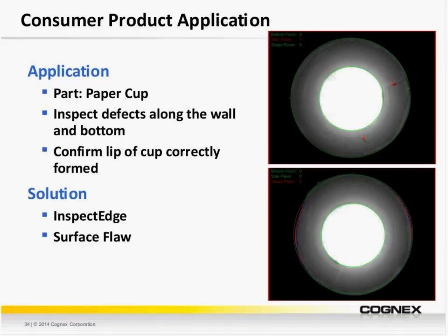Next, we have an application from the consumer products industry — detecting several defects on a paper cup. The goal is to inspect defects along the wall and bottom with a single camera: detecting holes, burn marks, and contaminants along the surface, as well as confirming that the lip of the cup has been correctly formed. Here we're using a few tools. Along the sides and on the bottom, we're using Surface Flaw — the top image shows the tool detecting two small defects. We're also using InspectEdge to detect if the lip is correctly formed, setting the tool to an annulus region to verify whether the edge maintains a certain radius. The bottom image shows we've detected a defective lip.